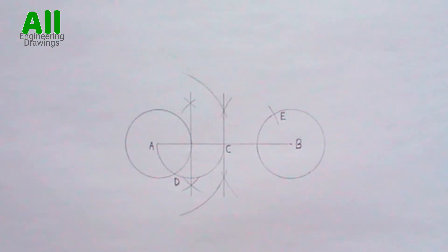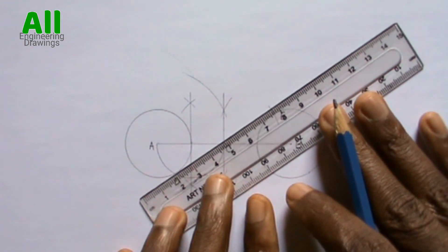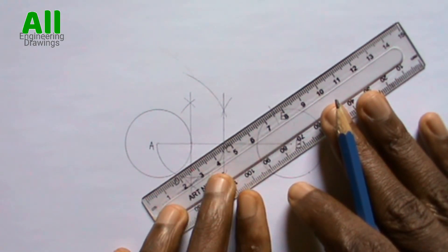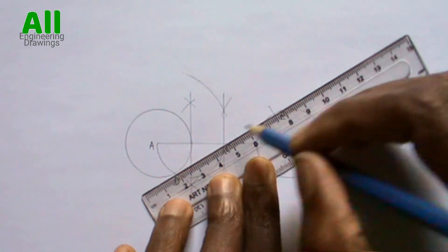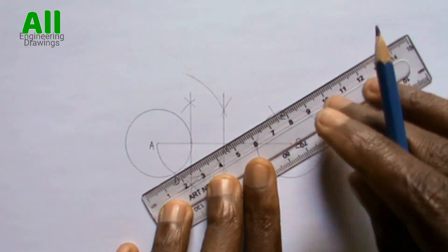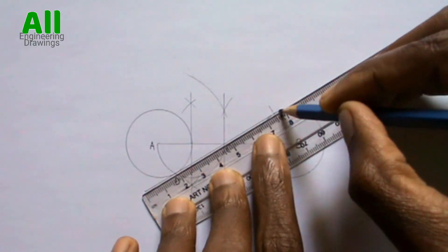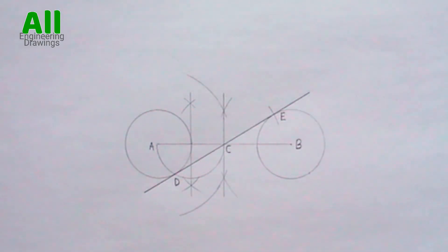Now, draw a line passing through point D and point E. This line passing through point D and E is the internal tangent.